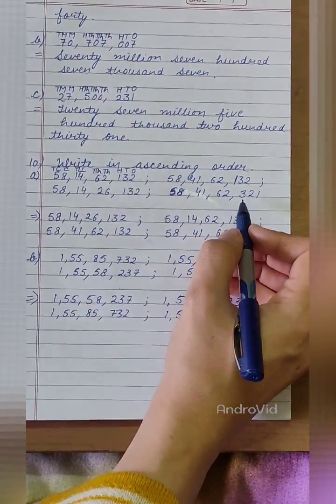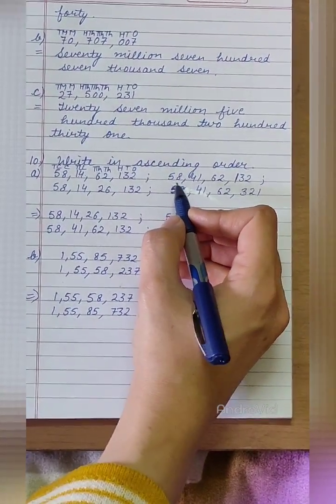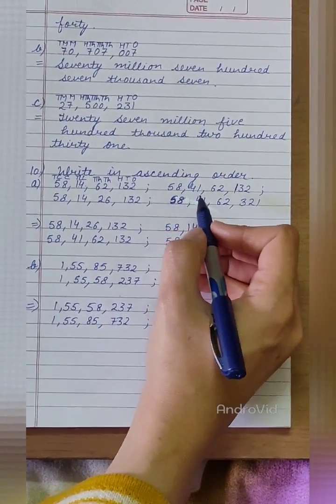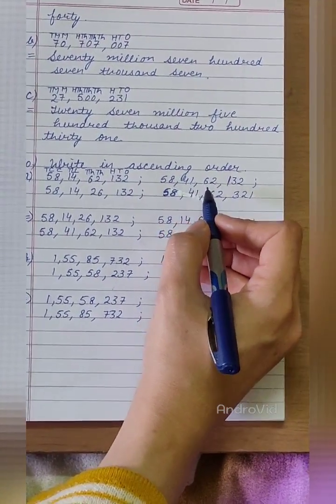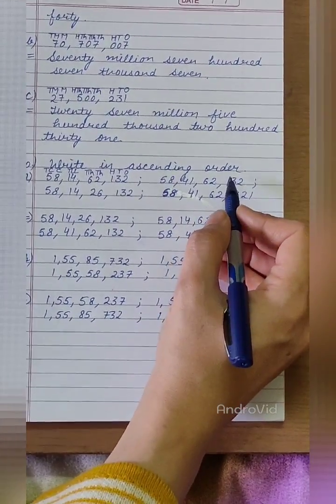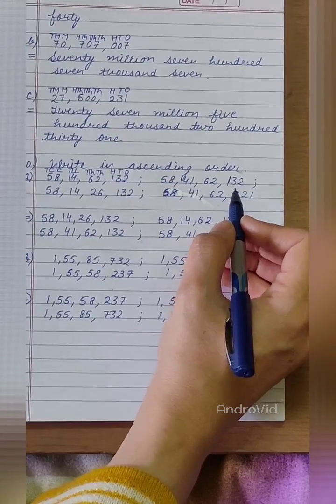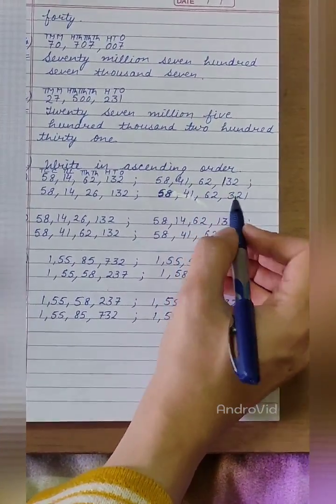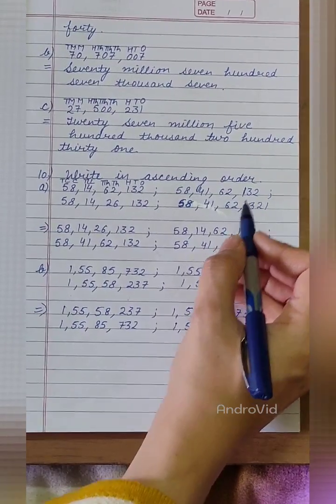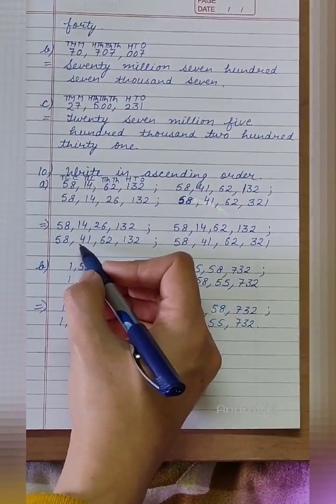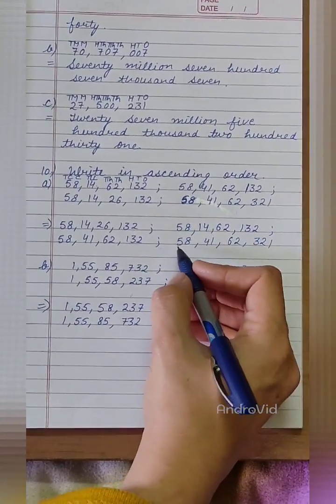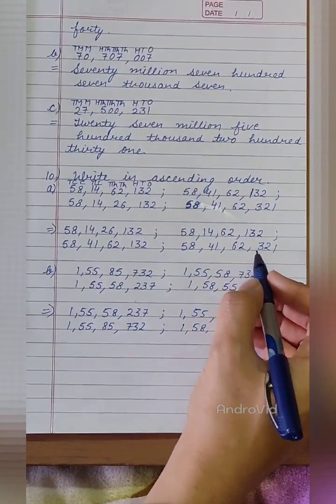Now, in 2nd and 4th number, the digits at 10 crore and crore's place is same. Digits at 10 lakh and lakh place is same. Digits at 10,000 and 1,000's place is same. But the digit at 100's place is 1 and 3. Since 1 is less than 3, 2nd number will come firstly, that is 5841-62132. So, the greatest number will be 5841-62321.